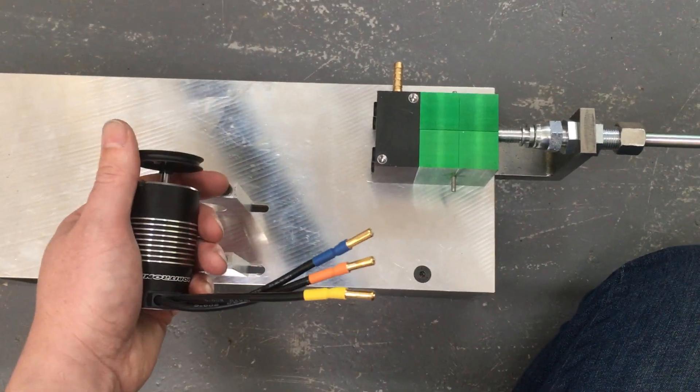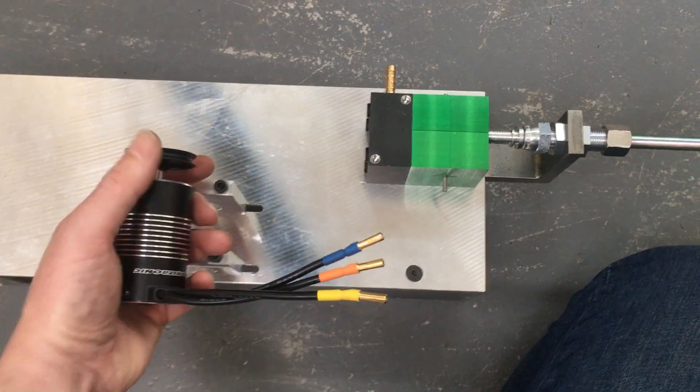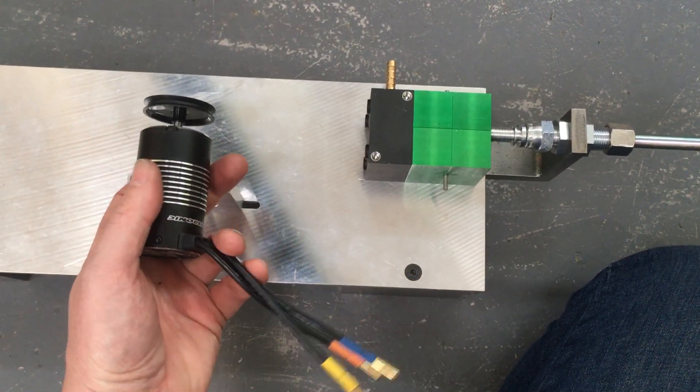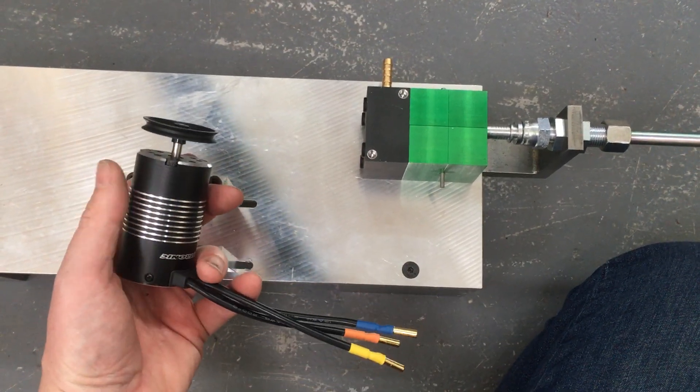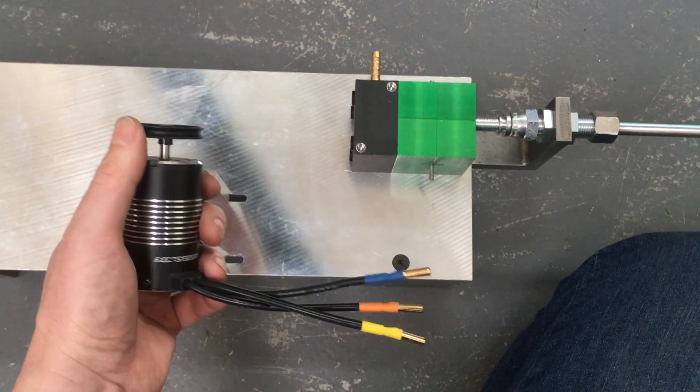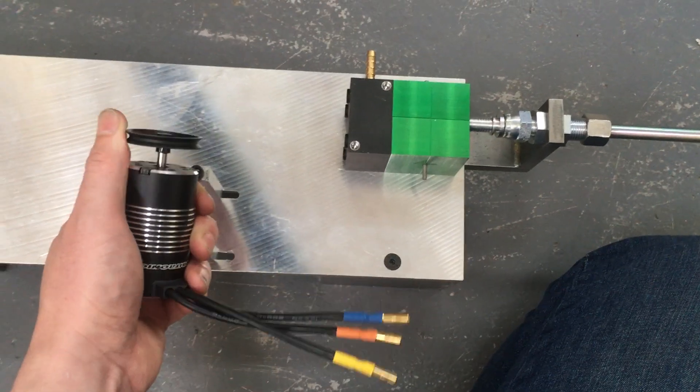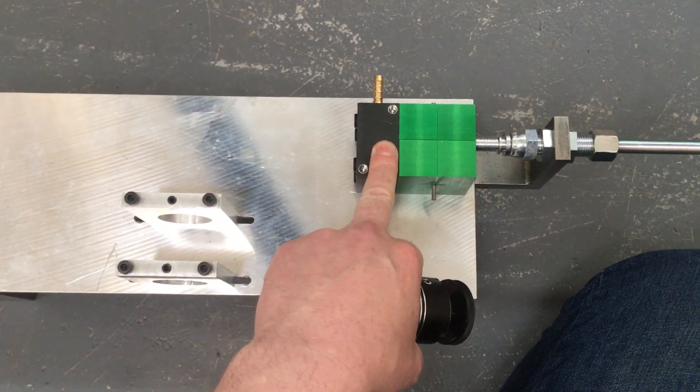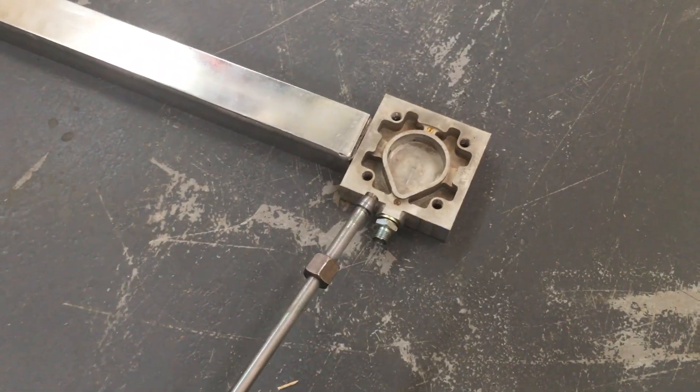And see what power we can get. We've got a thousand watt pure sine wave inverter. Yeah, it's all about just getting the pulley sizes matched up and seeing what speed we can get this to now, using heat and low pressure.